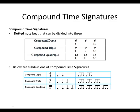Compound time signatures. We can characterize them as dotted note beats — they can be divided into three. Just like in simple time, we also have compound duple time, where duple means two beats. Because all the beats are subdivided into three, we divide by three. That's why in six-four, or six-eight, or six-sixteen, there will be two groups of quavers, or crotchets, or semiquavers, depending on which beat.